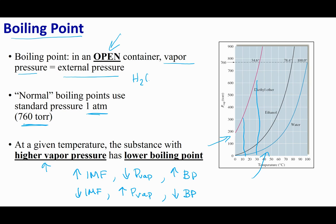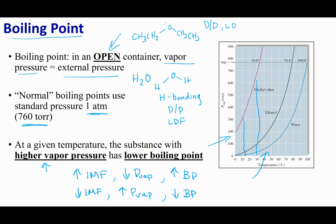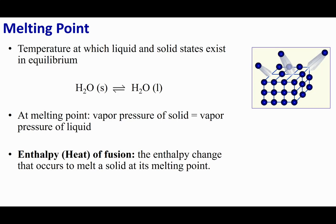Water (H₂O) has hydrogen bonding, dipole-dipole interactions, and London dispersion forces. Diethyl ether, on the other hand, is a polar compound but only has dipole-dipole interactions and LDF — no hydrogen bonding — so it has fewer intermolecular forces, resulting in a higher vapor pressure. Liquids aren't the only things with a vapor pressure.